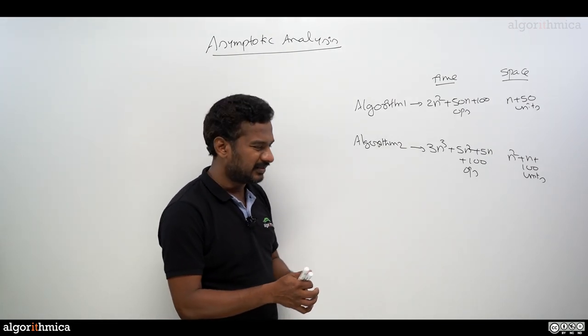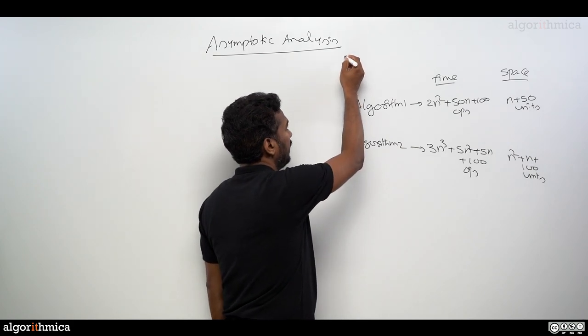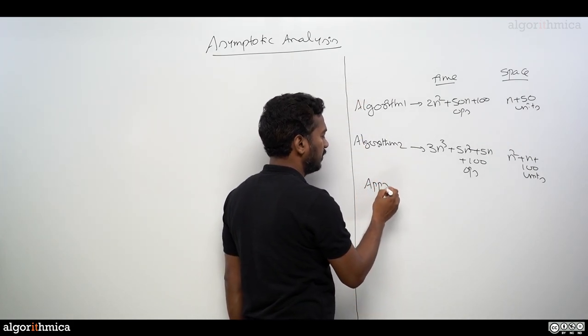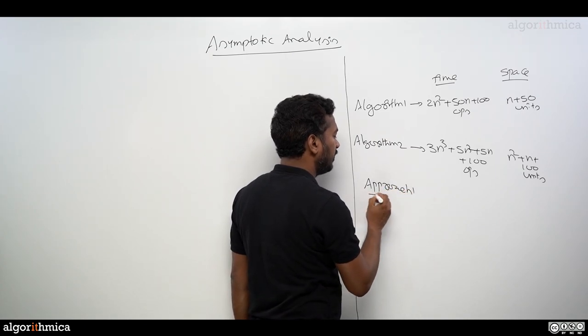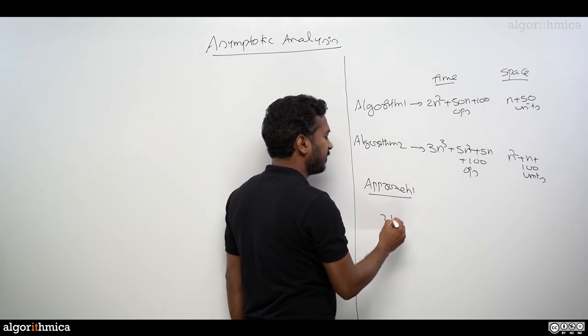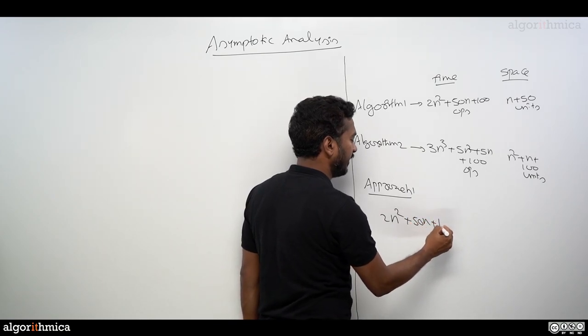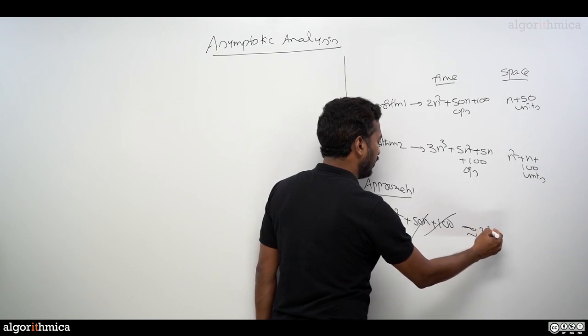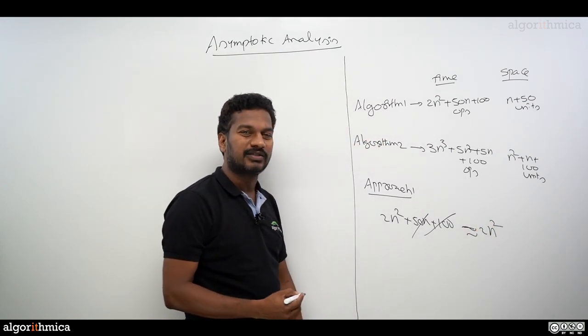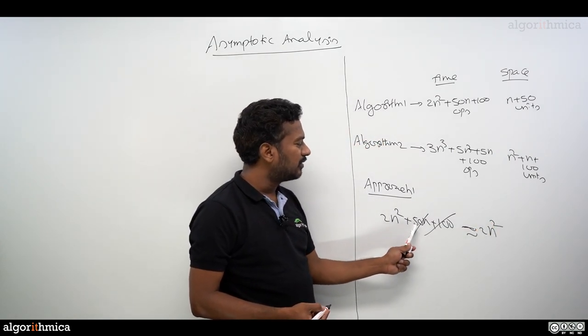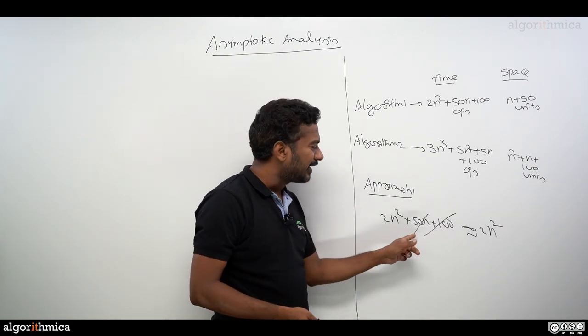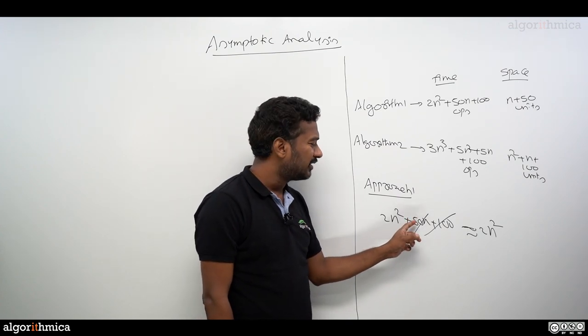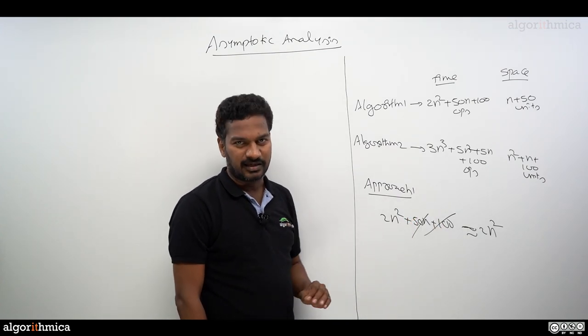How to do that? One approach is this. Let me write Approach 1. In Approach 1, what people do is they take this expression 2n² + 50n + 100, they cancel out these two, and they tell that our program takes approximately 2n² operations. What's the meaning of this cancellation here? You should not cancel out some of the operations.